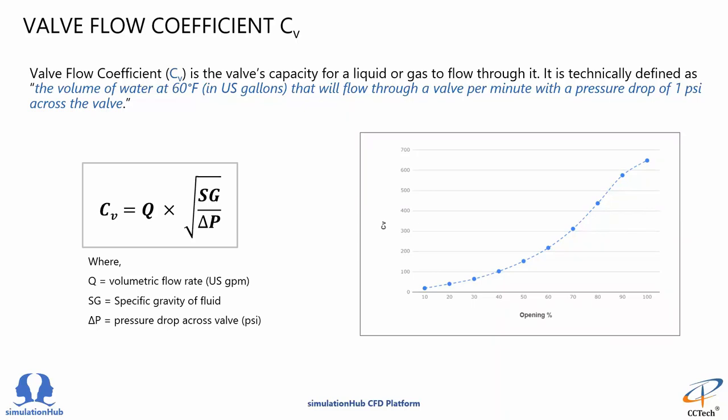If we know this value for a valve, we can easily find out how much flow would pass through the valve for a specific pressure drop, or else we can find out what amount of pressure drop needs to be maintained in order to pass a specific amount of flow through the valve.